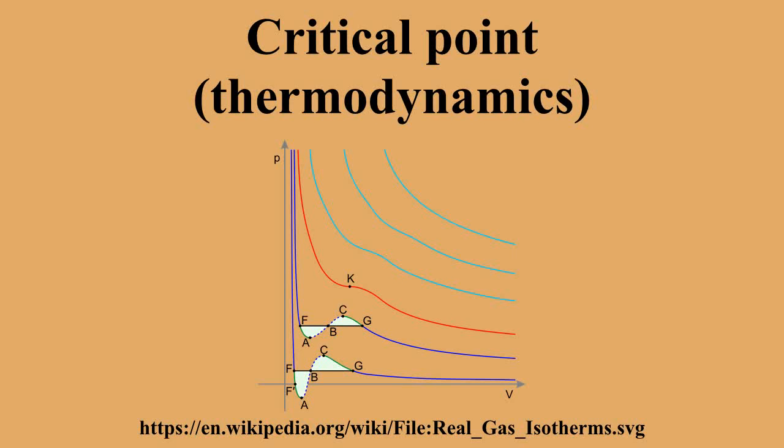As shown in the polymer-solvent phase diagram to the right, two types of liquid-liquid critical points are the upper critical solution temperature, which is the hottest point at which cooling will induce phase separation, and the lower critical solution temperature, which is the coldest point at which heating will induce phase separation.